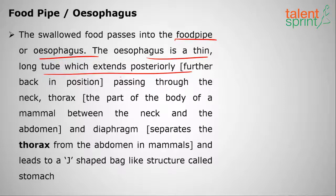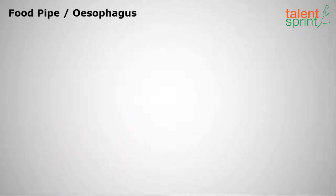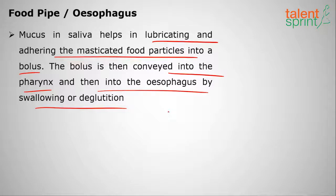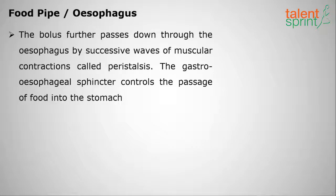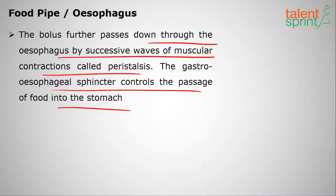The esophagus is a thin long tube which extends posteriorly, passing through the neck, thorax, and diaphragm — which separates the thorax from the abdomen — and leads to a J-shaped bag called the stomach. Mucus in saliva helps in lubricating and adhering the masticated food particles into a bolus. The bolus is conveyed into the pharynx and then into the esophagus by swallowing. Food further passes down through the esophagus by successive waves of contractions called peristalsis.